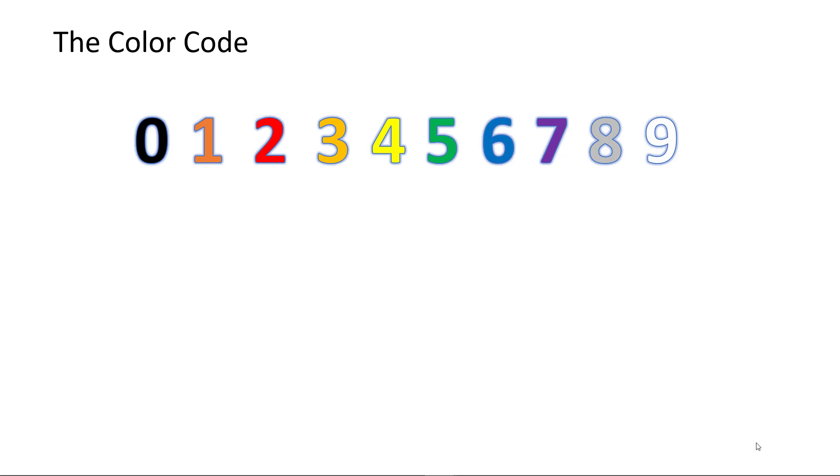So for a 4-band resistor, for example, this brown-black-yellow resistor with a gold band, the first three bands define the resistor's value, and the fourth band its tolerance. So the brown band denotes a 1, the black band a 0, and the third band a 4.